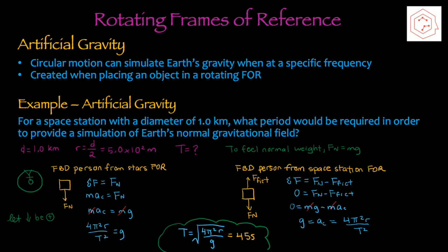The same result is obtained from the space station frame of reference. The free body diagram has the normal force downwards and also the fictitious centrifugal force directed outward from the center of the circle. The person is at rest in the rotating frame: 0 = fn − fictitious force, and fn = mg. Mass cancels since it's on both sides. Plugging in the formula for centripetal acceleration and isolating for T gives the period equal to 45 seconds.